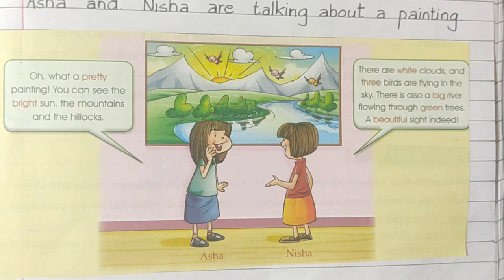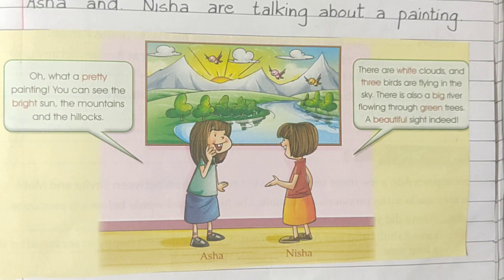Asha and Nisha are talking about a painting. 'Oh, what a pretty painting. You can see the bright sun, the mountains and the hillocks. There are white clouds and three birds are flying in the sky. There is also a big river flowing through green trees. A beautiful sight indeed.'